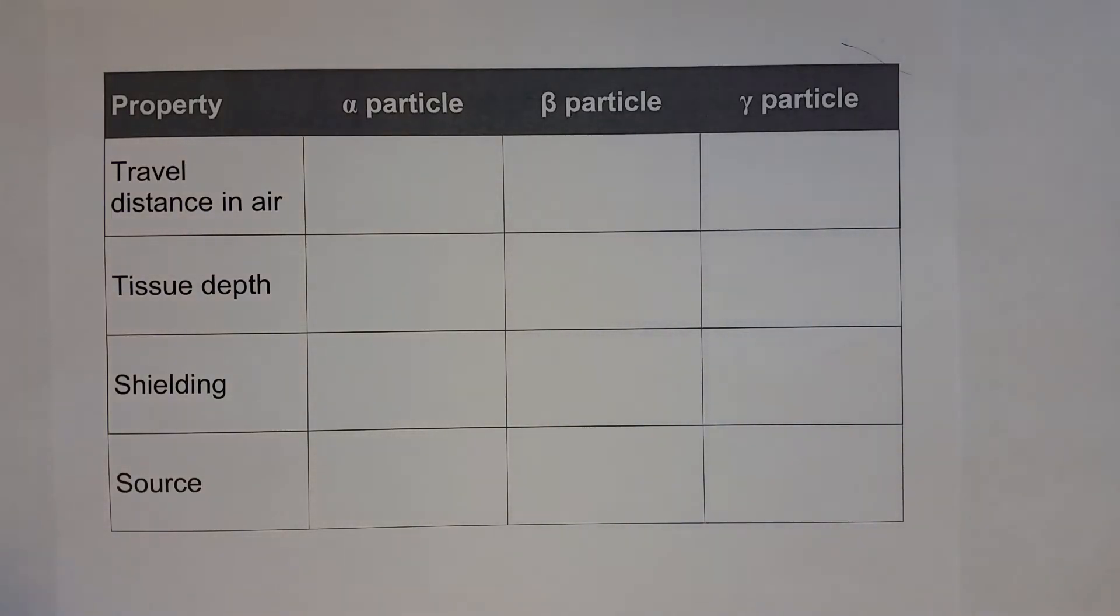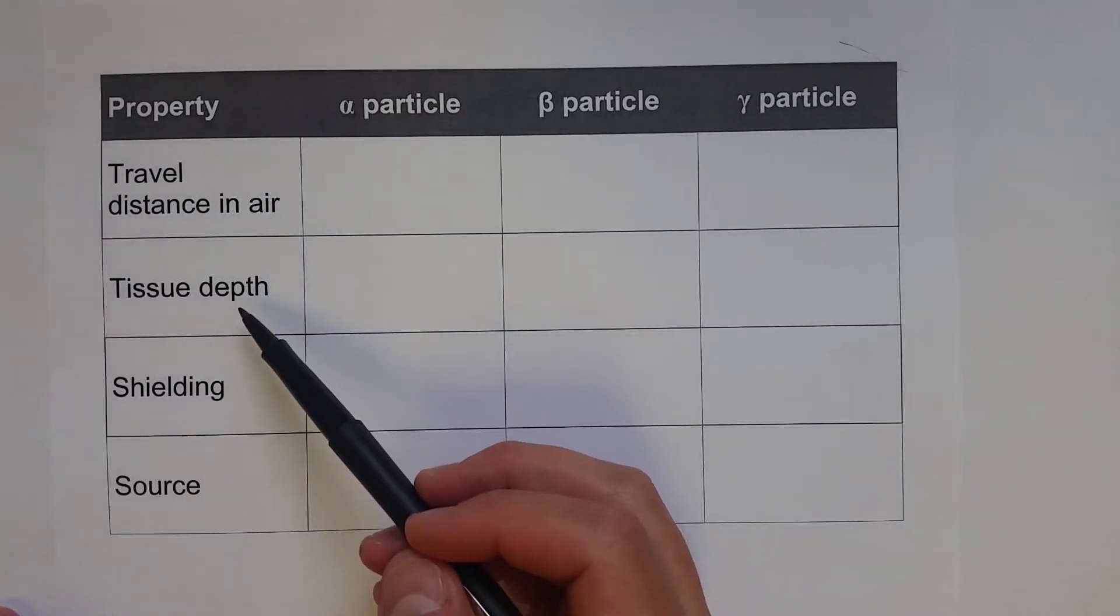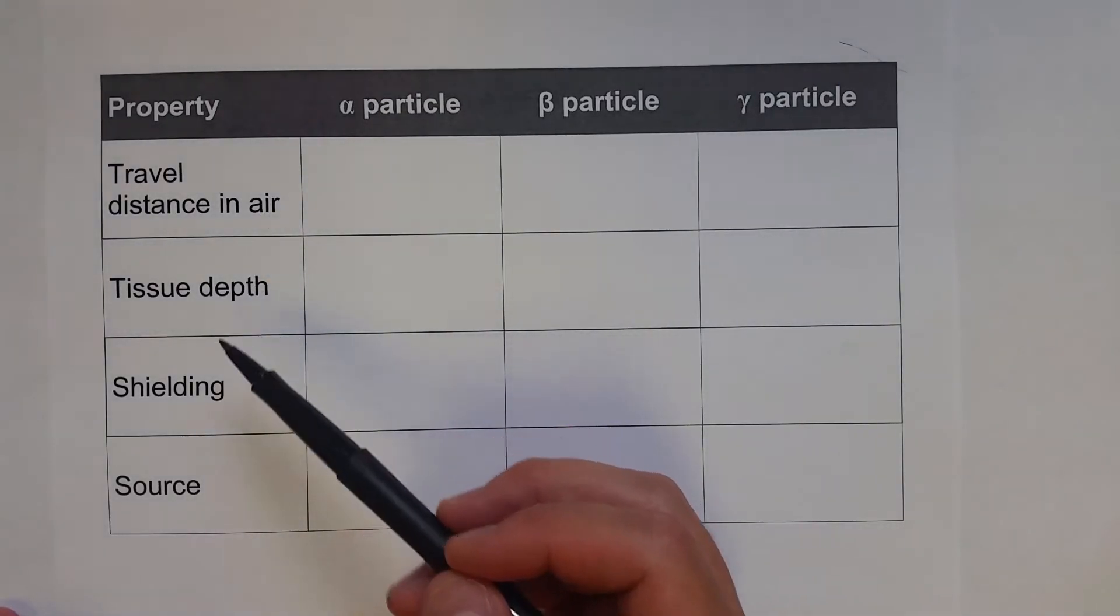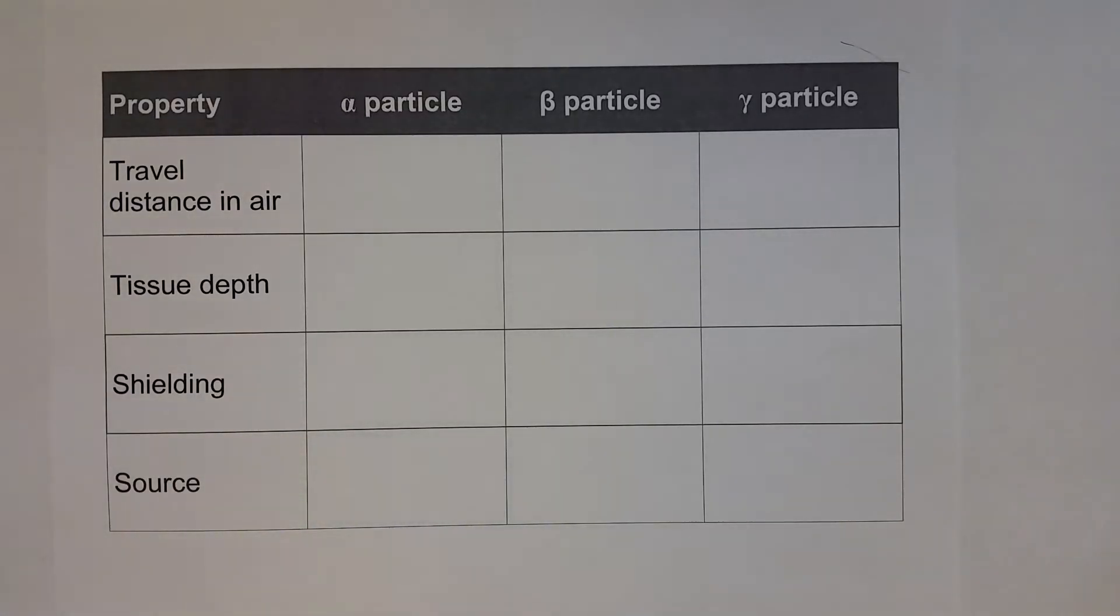A couple of things that we would want to describe about different types of radiation are how far they can travel in air, how far they can penetrate your skin or tissue, tissues within your skin, what type of shielding you would need, and then a couple of different sources where they can be emitted from.